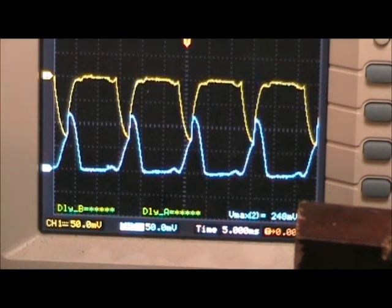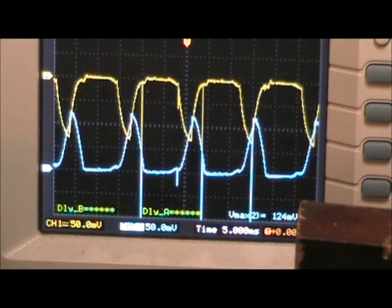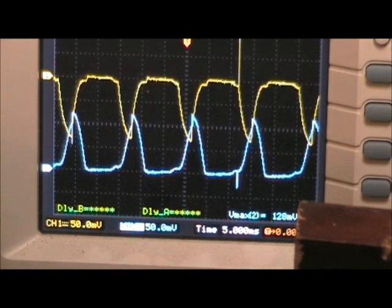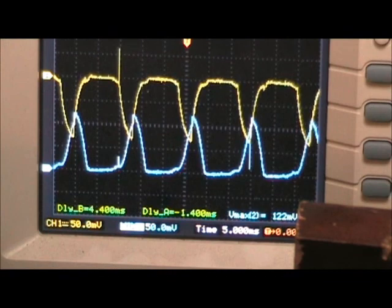And if I advance the timing, I can get it down to 124 millivolts, which is 1.2 amps peak current. And the rotor speeds up.